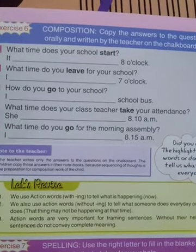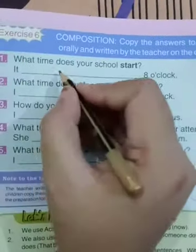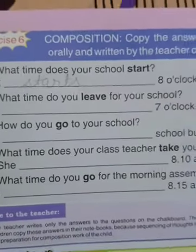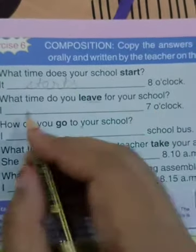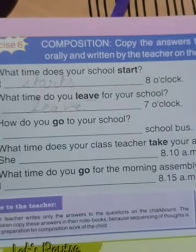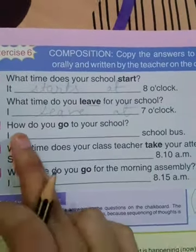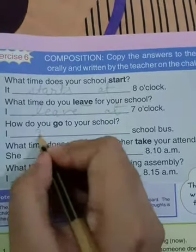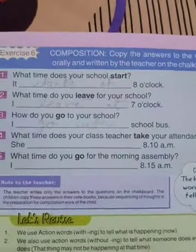Do this activity in your book. Exercise number six from page number 33 — you have to complete the sentences. 'What time does your school start?' — It starts at eight o'clock. 'What time do you leave for school?' — I leave — l-e-a-v-e — leave. Here you will write it also.